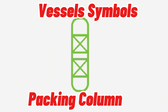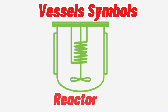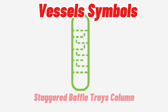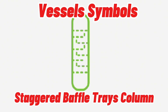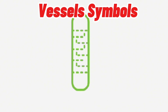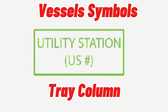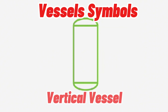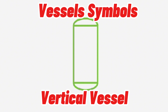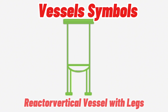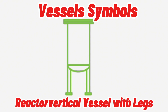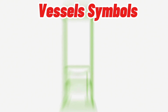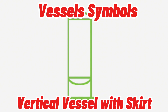Further vessel types include: Packing Column, Packing Column Reactor, Staggered Baffle Trays Column, Tray Column, Vertical Vessel, Reactor Vertical Vessel, and Vertical Vessel With Skirt.